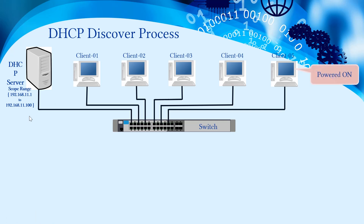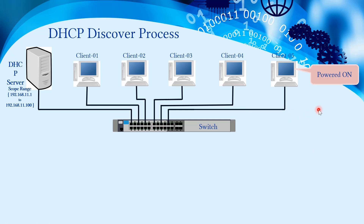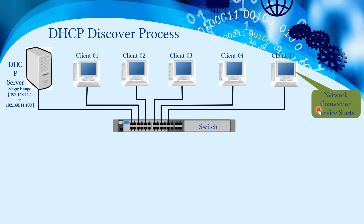We need to understand how the DHCP Discover process is initiated from the client machine. Whenever we power on a system — physical or virtual — the POST process completes first. Then the operating system boots and all services start, including one important service called the network connection service. When the network connection service starts, it verifies the network configuration — that is, the TCP/IP configurations. If TCP/IP is configured to obtain an IP address automatically, the network connection service will trigger the DHCP client service.